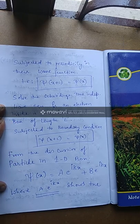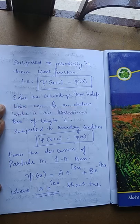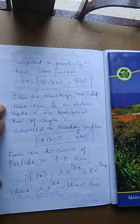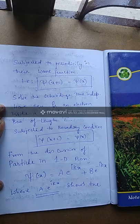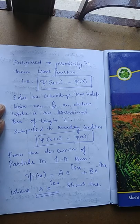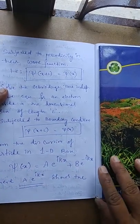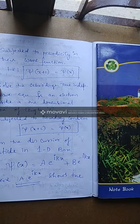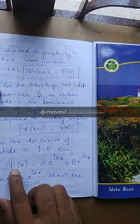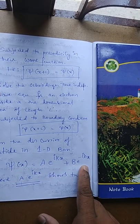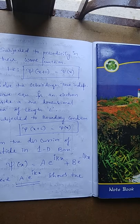We solve the time-independent Schrödinger wave equation for the electron inside this one-dimensional metal box of length L. We choose the time-independent case because the energy of the electron is not going to vary with time — we've assumed ground state with no energy input from temperature or electric field. The general solution from particle-in-a-box is ψ(x) = A·e^(ikx) + B·e^(−ikx).